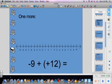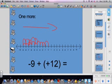Here we have negative 9 plus positive 12. Starting at 0, I count to negative 9: 1, 2, 3, 4, 5, 6, 7, 8, 9. Then I move positive 12 from negative 9: 1, 2, 3, 4, 5, 6, 7, 8, 9, 10, 11, 12. I land on 3, so the answer is positive 3.